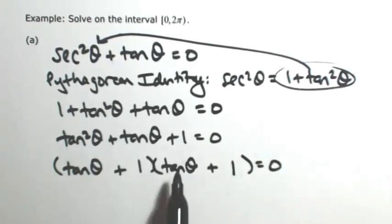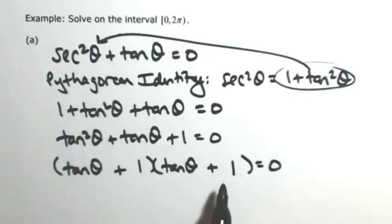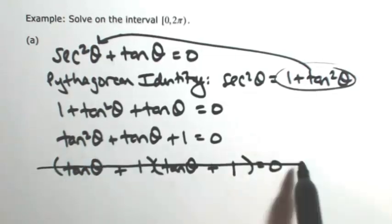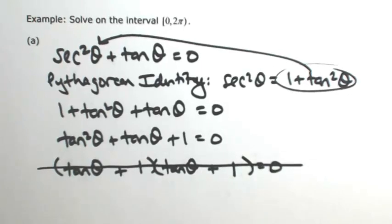If I multiply this back out, I get my tangent squared, but then I get a tangent of theta plus another tangent of theta. It's 2 tangent theta. It's not the same thing. Okay, so this one's not going to factor nicely.